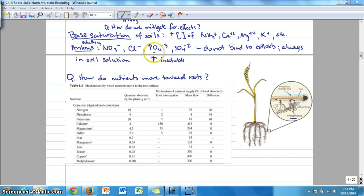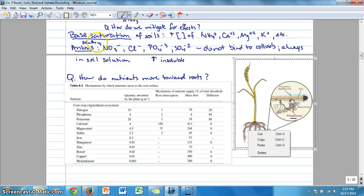We talked about how phosphate is relatively insoluble and will have an effect on this question, how do nutrients move towards roots? Whereas nitrate is highly soluble and will have a different way of moving, or primary way of moving towards roots in solution.